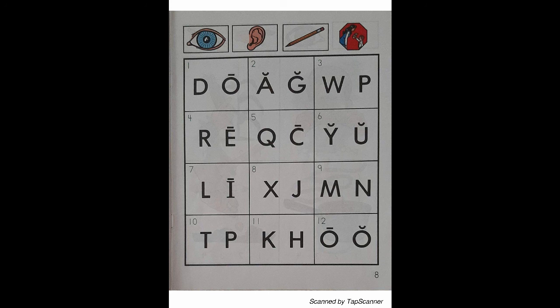Look at the letter in box 3. Listen as I say the sound of the letter. W — Walrus — W. With your pencil, circle the letter that reads W.